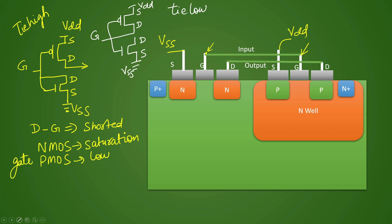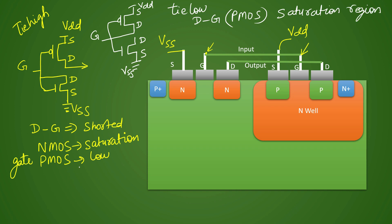In the tie low cell, you will have a drain-gate short, but this time it will be at the PMOS side. When you have a drain-gate short, it acts as a PN junction which is forward biased, so this will always give VDD at the gate. That is why the PMOS will always be in saturation region. The concept is similar to tie high, but now it applies to PMOS instead of NMOS.